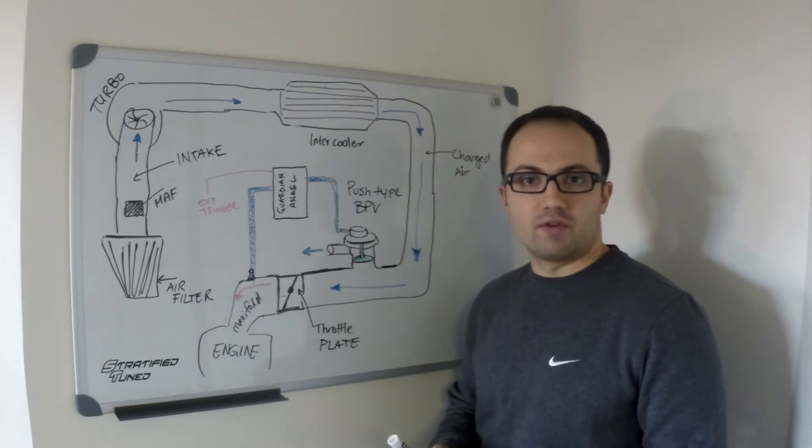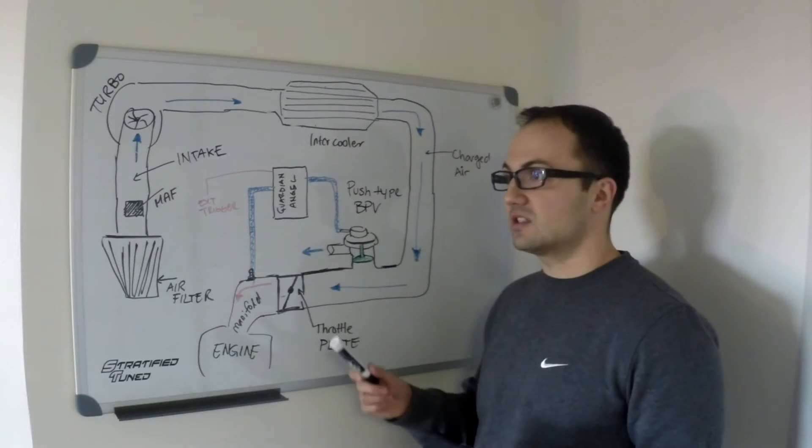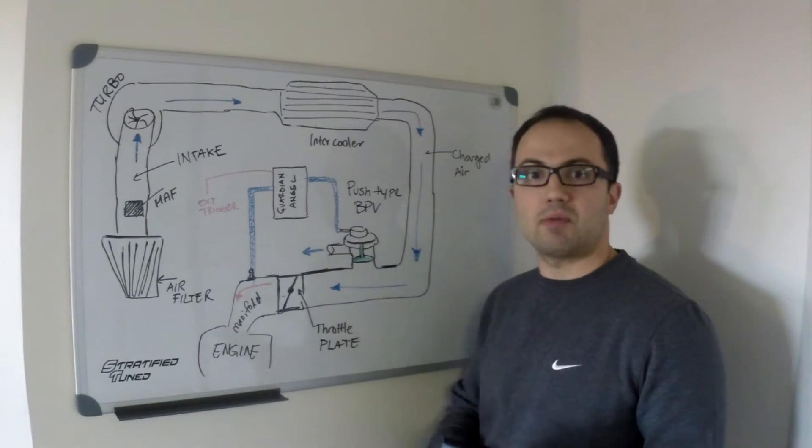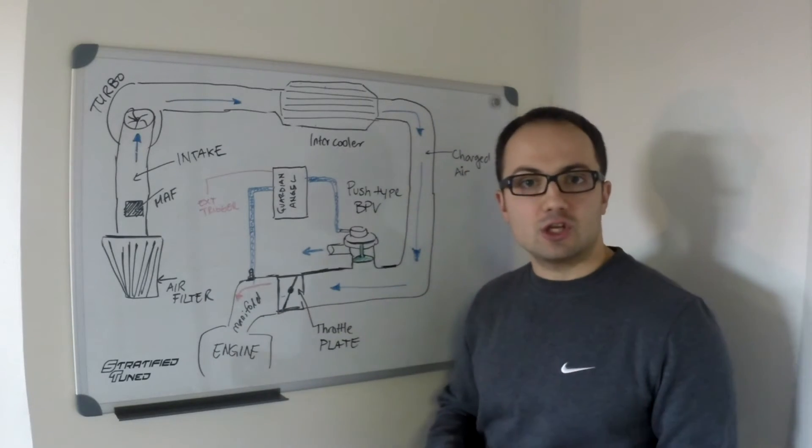First of all, overboost happens for a number of reasons in turbocharged engines. It could be a loss of wastegate control, a line popping off, or the wastegate malfunctioning. It could be a poor tune, or it could be a drastic change in temperature.